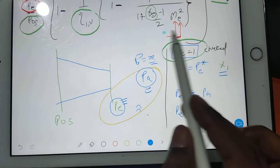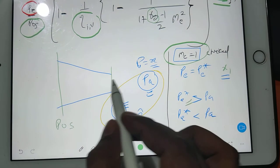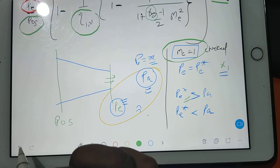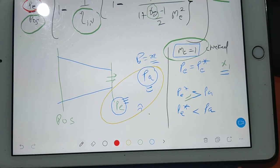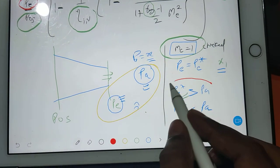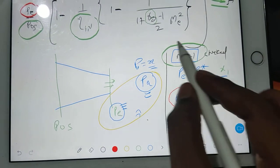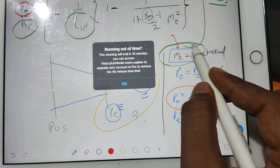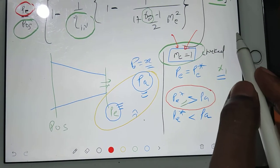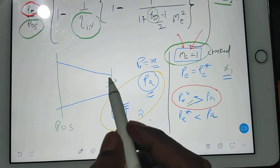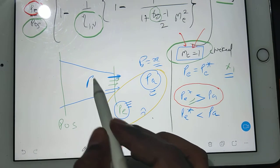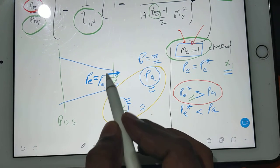Your M equals 1 you have achieved at the exit. Now, if you are saying that the nozzle is choked, it means what? Your assumption was correct. It means what? Really at the exit you have exit pressure as star pressure.